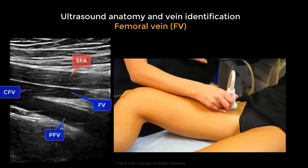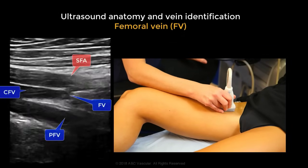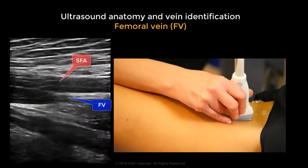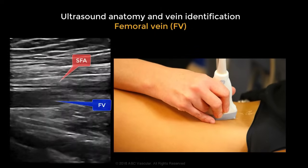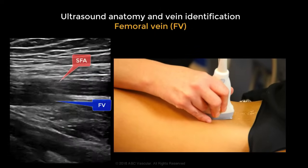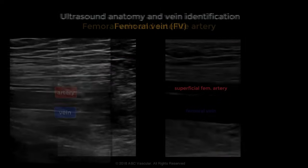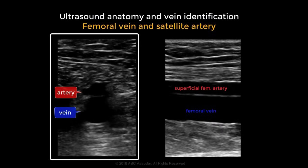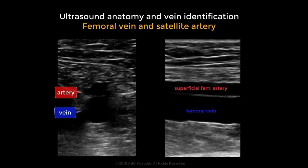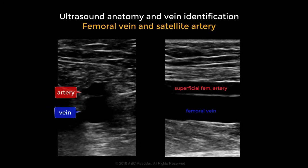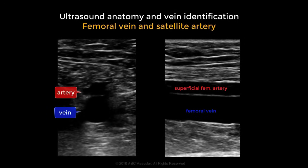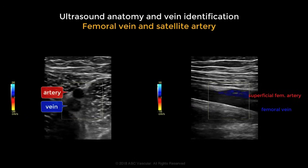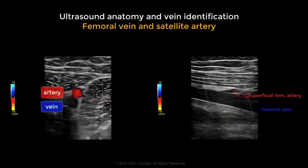From this level, move the transducer further down distally into the thigh to identify the femoral vein. The femoral vein lies posteriorly to the superficial femoral artery, and you can appreciate this both in cross-section and longitudinal views. This is an important landmark especially in the presence of pathology; therefore we have arterial flow superiorly compared to the venous flow.